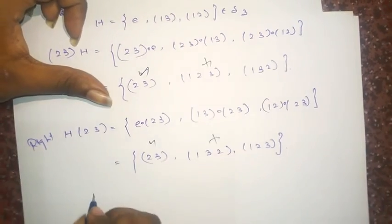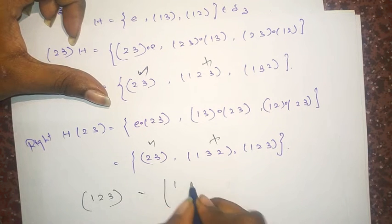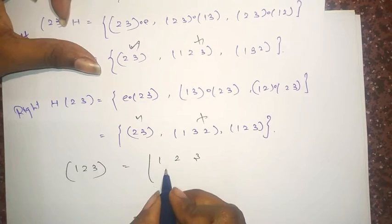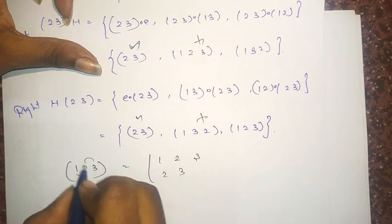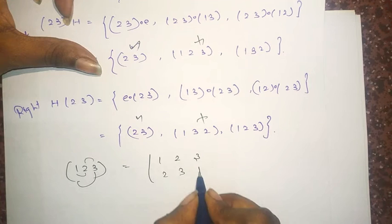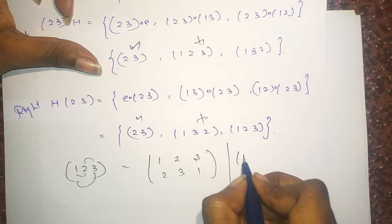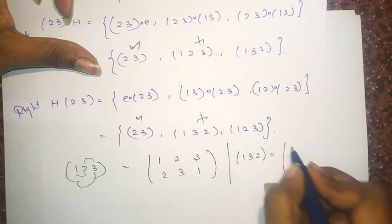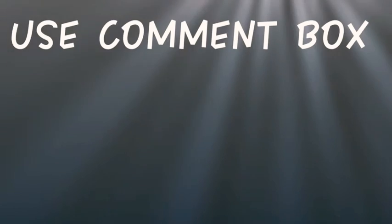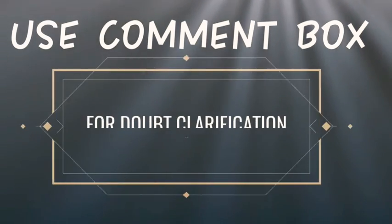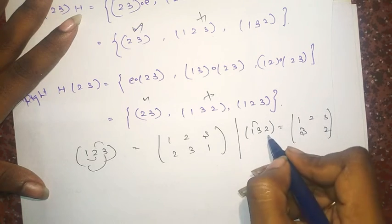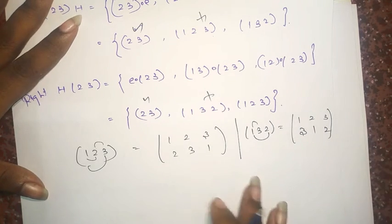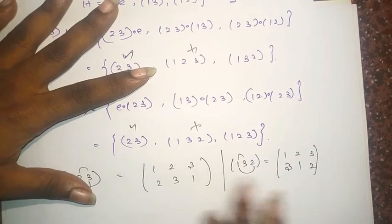Because if you have taken the permutation (1,2,3), you will get like (1,2,3) and 1 is mapped to 2 here, 2 is mapped to 3 here, 3 is again mapped to 1. If you have taken (1,3,2), and 3 is mapped to 2, 2 is mapped to 1. These two are not the same.